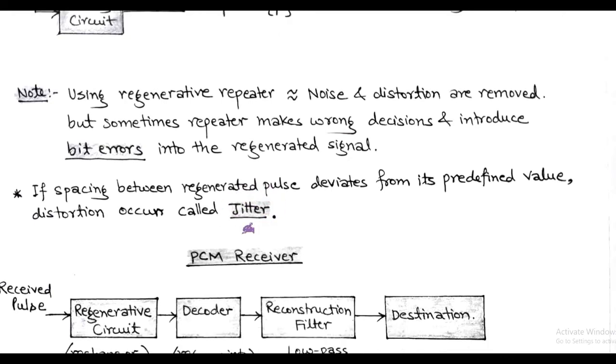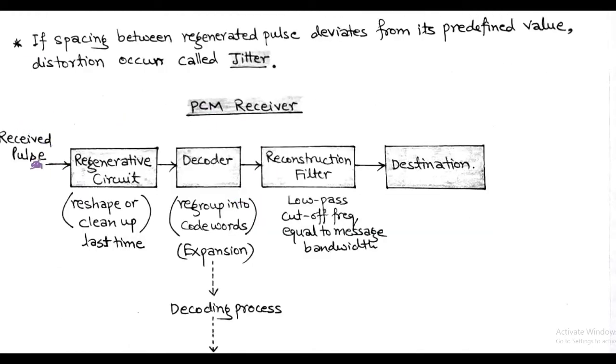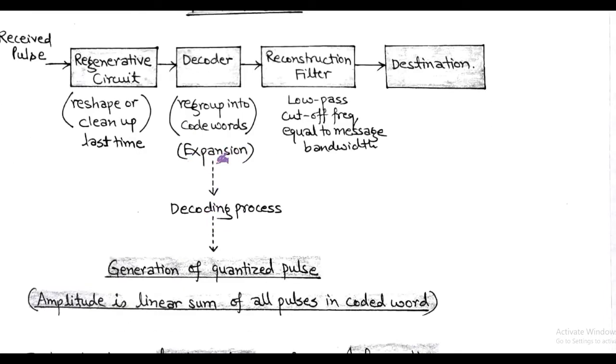Now at the PCM receiver, the received pulse is reshaped or cleaned up for the last time using regenerative circuit. After this, decoder regroups the regenerative pulses into the coded word using the expansion process, which is called decoding process. Decoder generates a quantized pulse. The amplitude of this quantized pulse is the linear sum of all the pulses in the coded word.